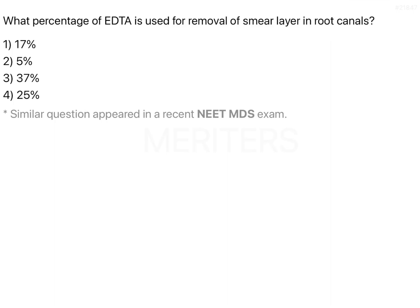EDTA can also be combined with hydrogen peroxide. Hydrogen peroxide is important because when you bring about activation of the irrigant, it releases nascent oxygen. As we know, endodontic infections are polymicrobial infections, and as we go deeper into the canal the microbial flora becomes much more anaerobic. So when you use hydrogen peroxide, it releases this nascent oxygen and is able to destroy your anaerobic microorganisms.